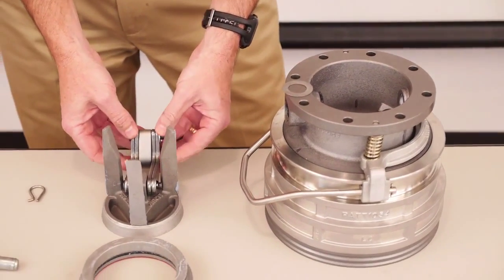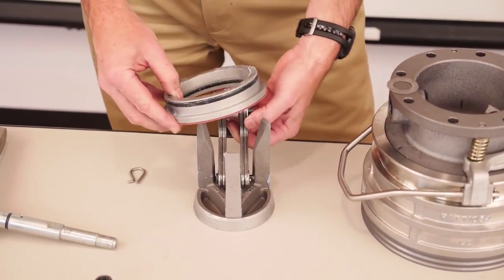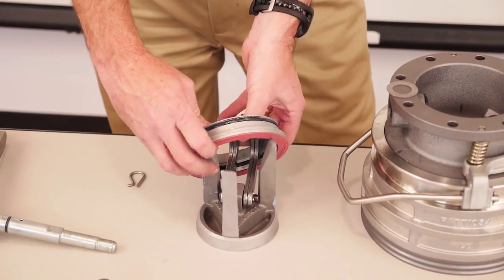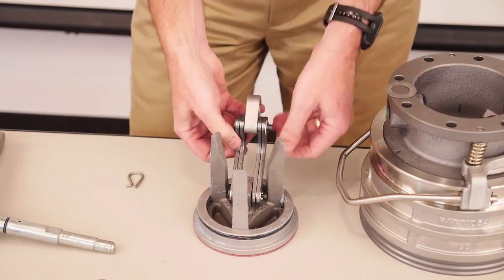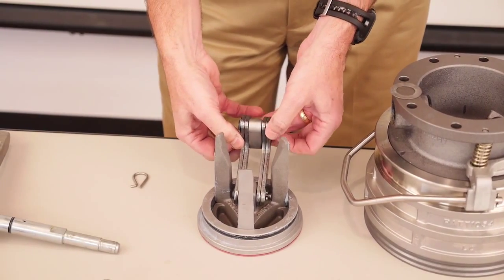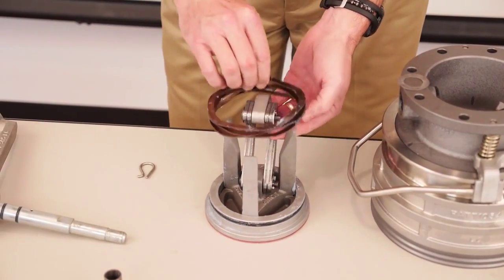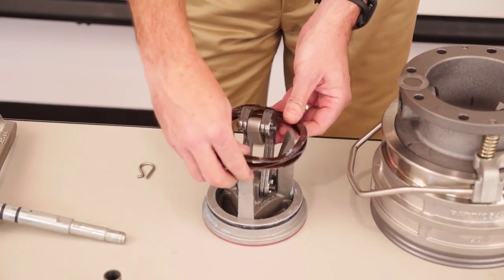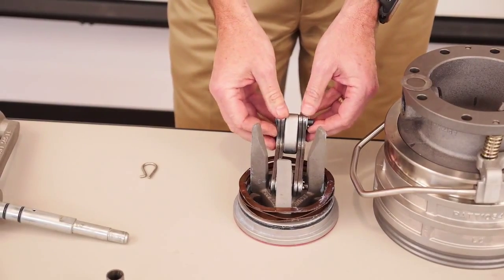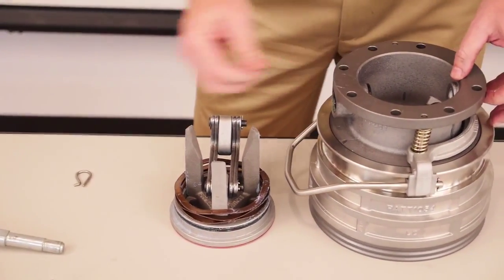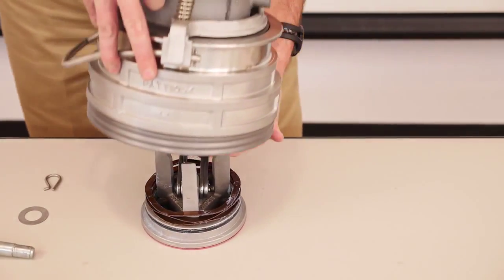So we'll start with our poppet and our adapter ring that goes back over the poppet. And you want to have the pressure links facing you, down and facing you. We'll take your wave spring. Now we'll take the coupler body and put it over your poppet assembly.